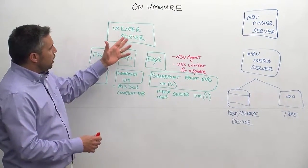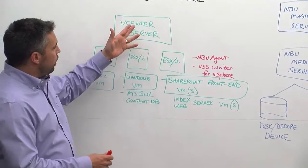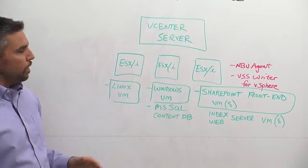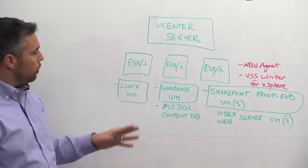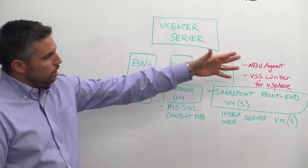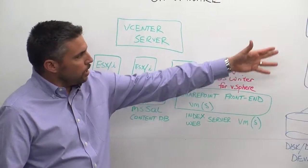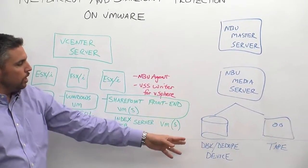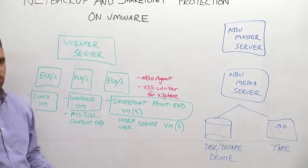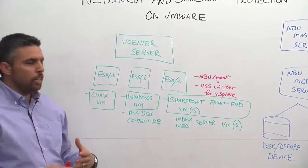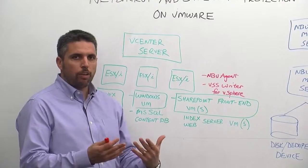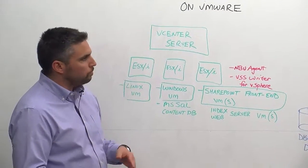Here we have our virtual infrastructure: vCenter, a couple of three ESX servers, and virtual machines. On this side, we've got the NetBackup server — master media server — a disk dedup device, as well as tape. This represents a typical customer environment backup and recovery infrastructure.